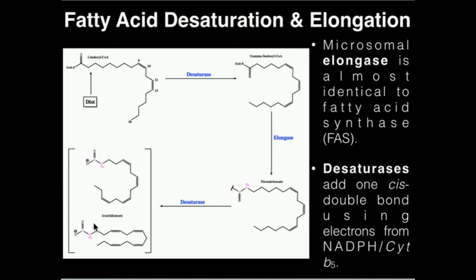Arachidonic acid is drawn here in the typical conformation in which you usually see it, particularly in the context of synthesis of eicosanoids such as prostaglandins, thromboxanes, and leukotrienes, although there are several other classes of eicosanoids.